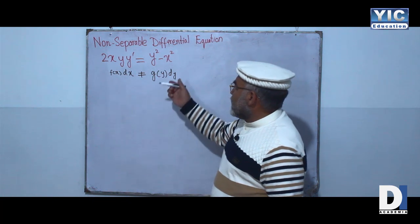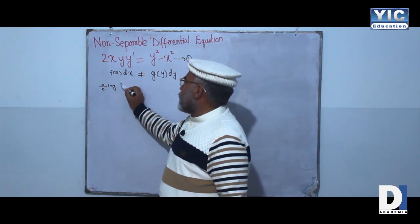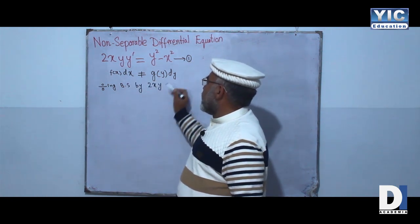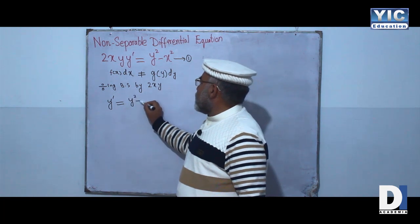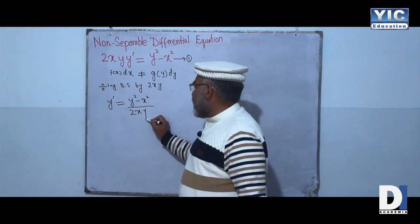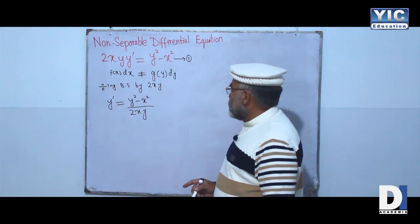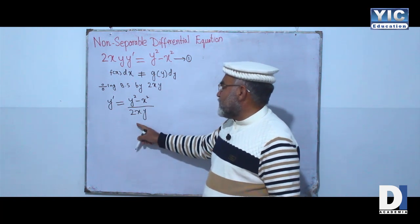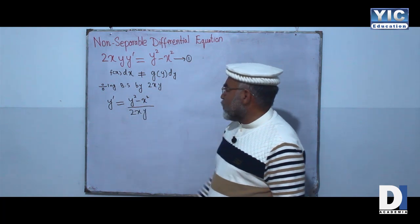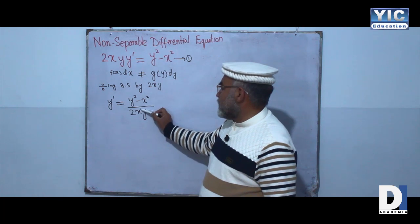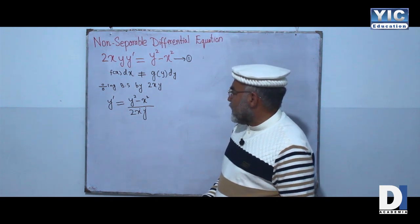We can write this differential equation as equation number one. Dividing both sides by 2xy, we can write it as y' = (y² - x²) / 2xy. These two functions are homogeneous — the degree of the denominator equals the degree of the numerator, both being degree two. So these functions are homogeneous but not separable.